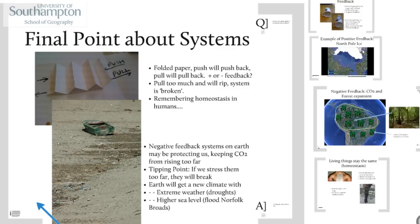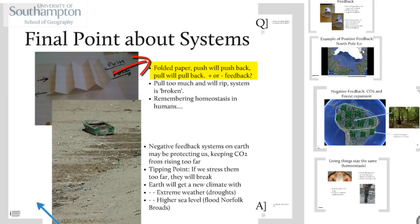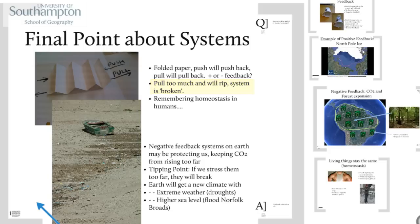A final point about systems: if you make a little paper spring, folded up in a concertina fashion, it's a system. If you push it gently, it will push back very gently; if you pull it equally, it will exert a tiny force pulling away from you. That's a negative feedback system — it just resists whatever you try to do to it. But the point is that if you pull it too much, the paper will rip and the system is broken.